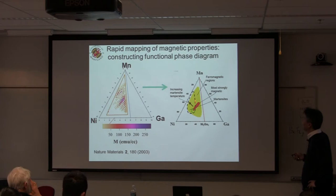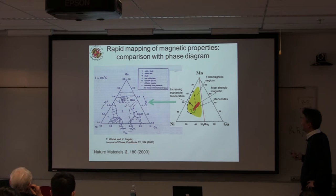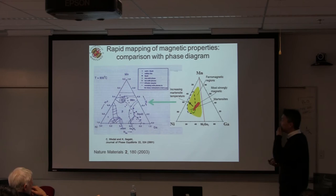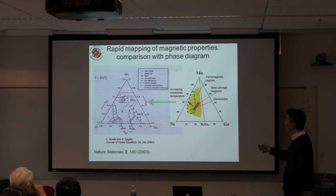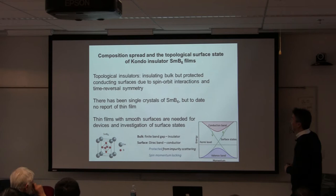Here the goal was different — we knew the desired composition but couldn't achieve it with a single target. Using a two-target composition spread, somewhere on the spread there would be a region with the correct composition because it changes continuously. On a three-inch wafer, there is indeed a spot with the correct composition — 14% boron corresponds to hexaboride. The hallmark of Kondo topological insulator behavior — saturation of resistance at low temperature — only happens at the correct composition. We were thus able to make a thin film of samarium hexaboride.